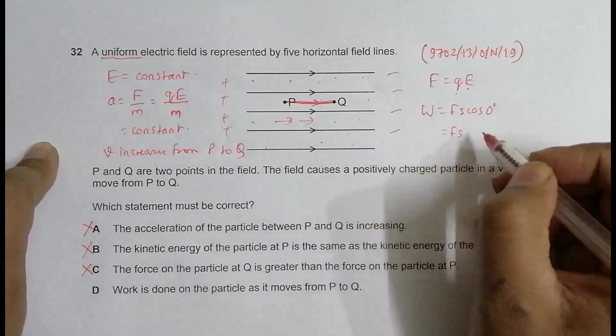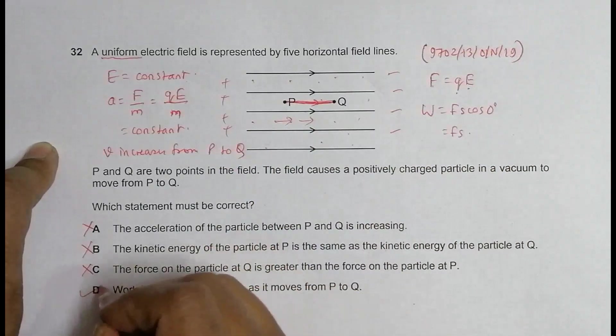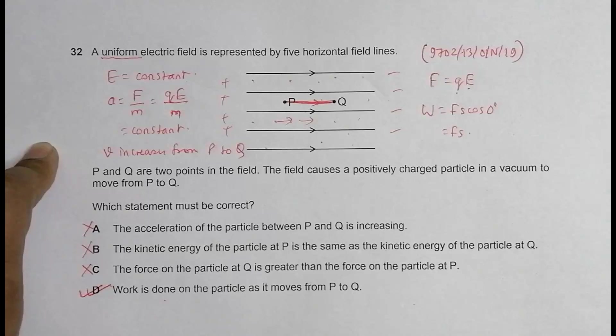Work is done on the particle from P to Q is the correct choice. So pretty interesting, it is the interesting question rather than the answer, because the question setters have tried their every bit to check our mental faculties, which we have to succeed if we need to score higher.